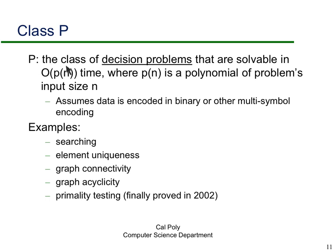Formally, P is the class of decision problems solvable in polynomial time, assuming data is encoded reasonably (e.g., in binary). Examples include: is an element in a set, is a graph connected, is a graph acyclic, and is a given number prime. In the next screencast, we'll discuss NP-completeness — what that concept means and its implications.